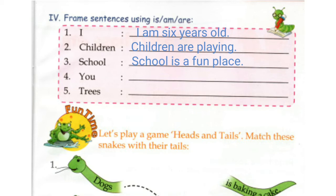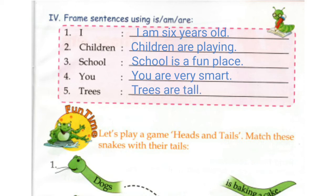Number four: You. Children, do you remember who is You's best friend? Is it Is or Are? It's Are. So we can write: You are very smart. Number five: Trees. Trees means many trees — it's a plural noun. So we'll use Are. Trees are tall.